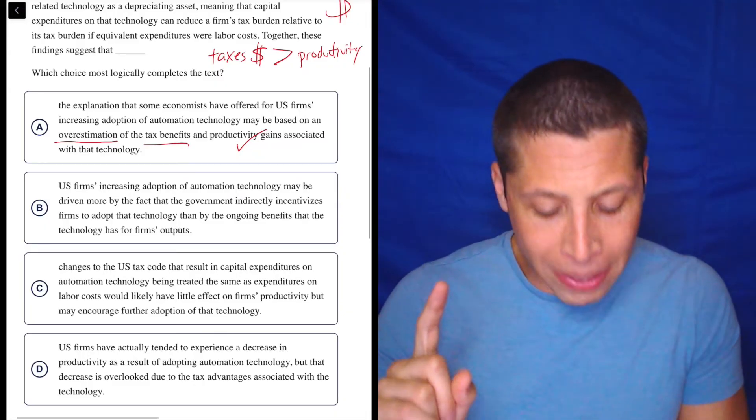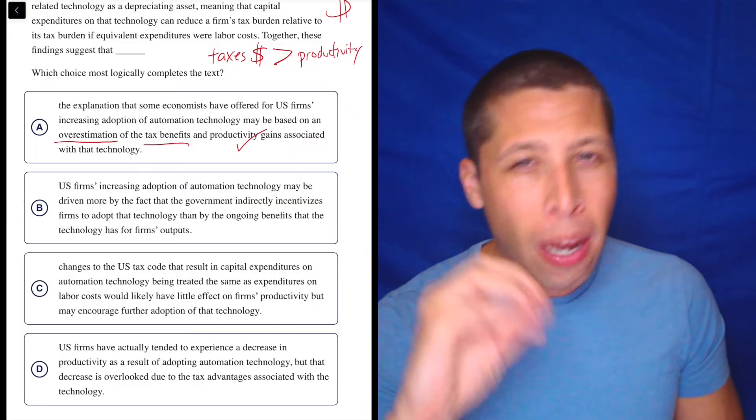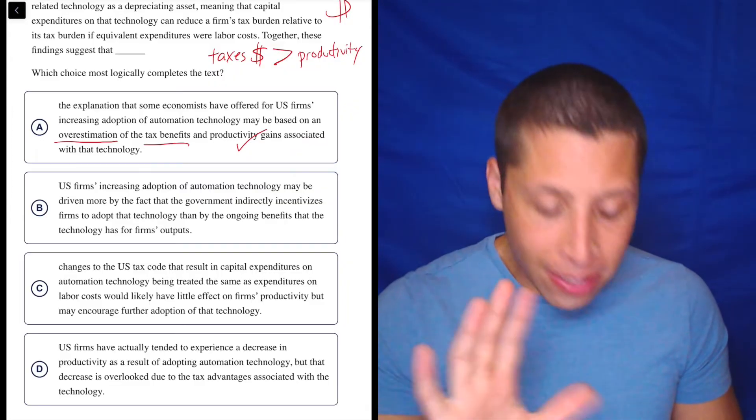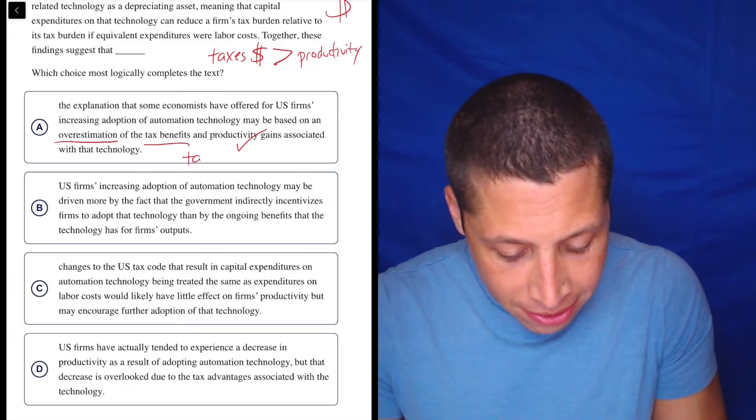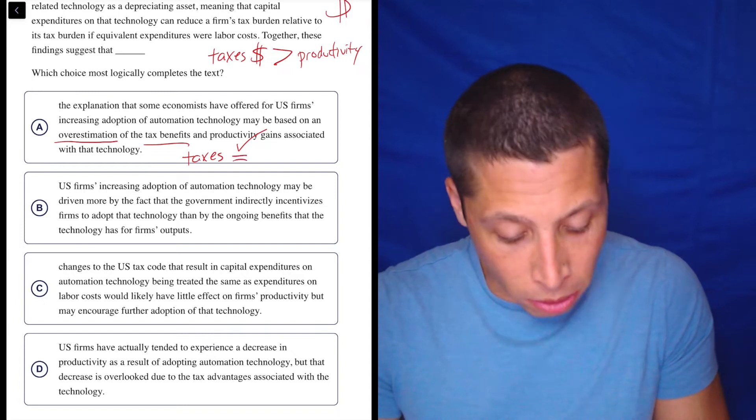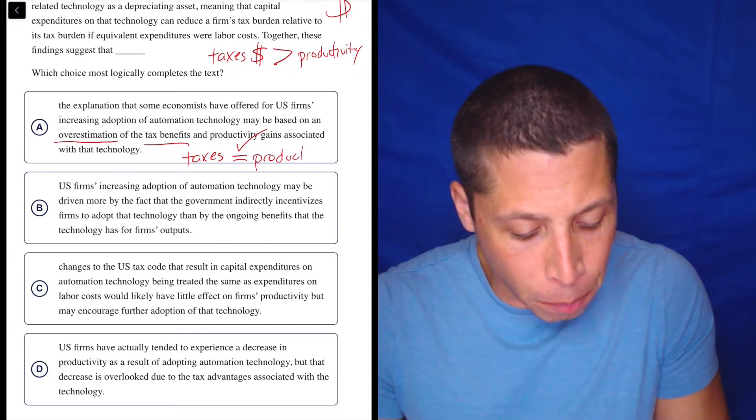But what about the tax benefits? So if we dumb summarize this choice, this is saying taxes equal the productivity, that they're both bad.